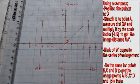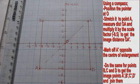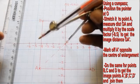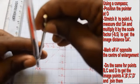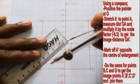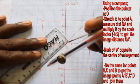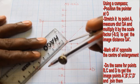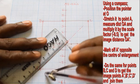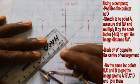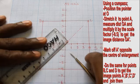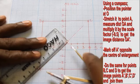Using a pair of compasses, put the compass pointer at the center of enlargement and stretch to point A. Measure the distance of A from the center of enlargement and multiply it by the scale factor, which is negative half, to get the image distance.